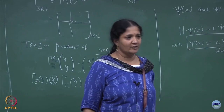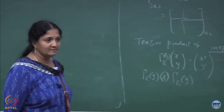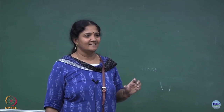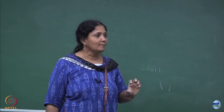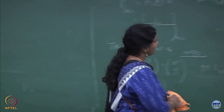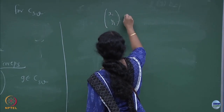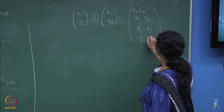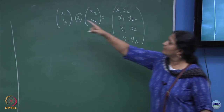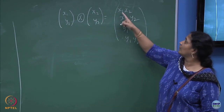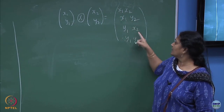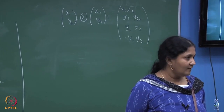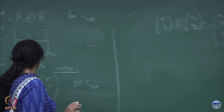So x1, y1 tensored with x2, y2 will give you x1x2, x1y2, y1x2, y1y2. The vector space of a two-particle system becomes 4-dimensional, and the corresponding matrices are given by the tensor product. You take gamma_E(G) and take a tensor product with gamma_E(G). This is what tensor product means: you take a 2×2 matrix and multiply each element of the first matrix by the entire second matrix.